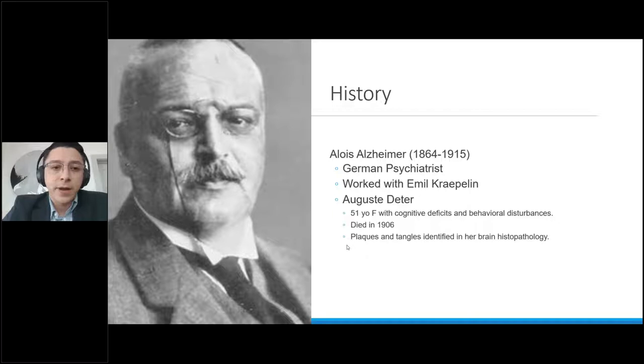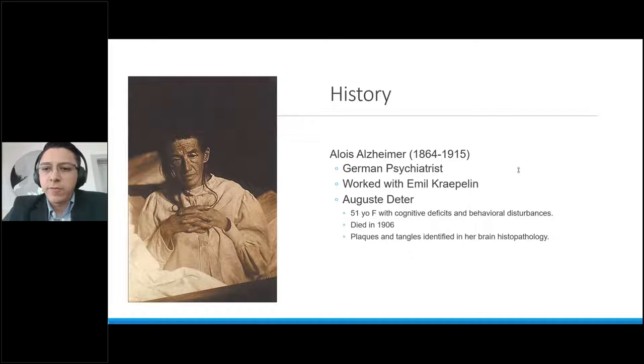Kraepelin was able to replicate those findings in other patients with similar presentation. So he supported that these findings together were named after his colleague, Alzheimer. This is a photo of Ms. Deter. You can see, unfortunately, a fragile, frail, vulnerable old lady, but she was 51 years old. So you can see the deterioration in her physical state here.